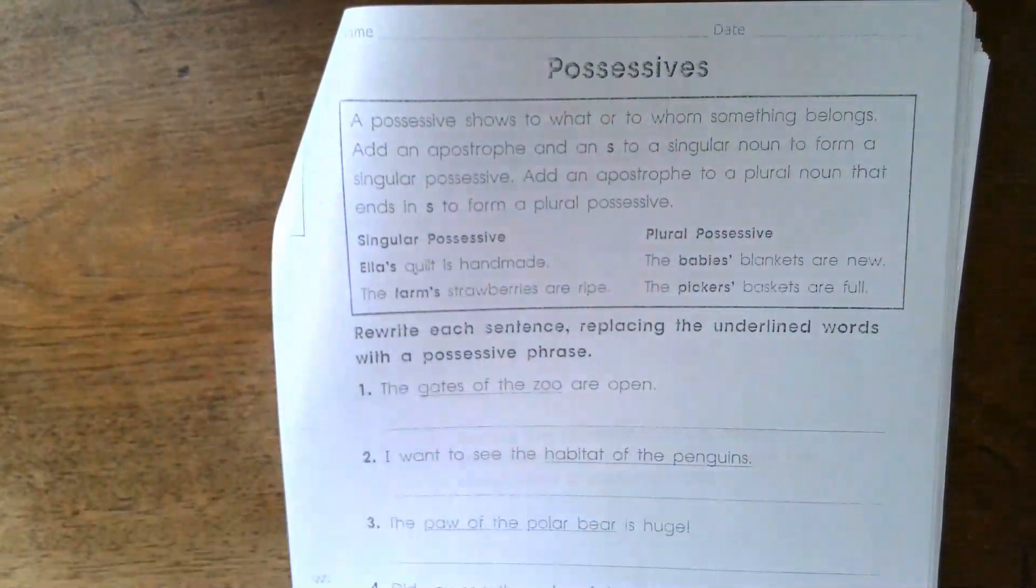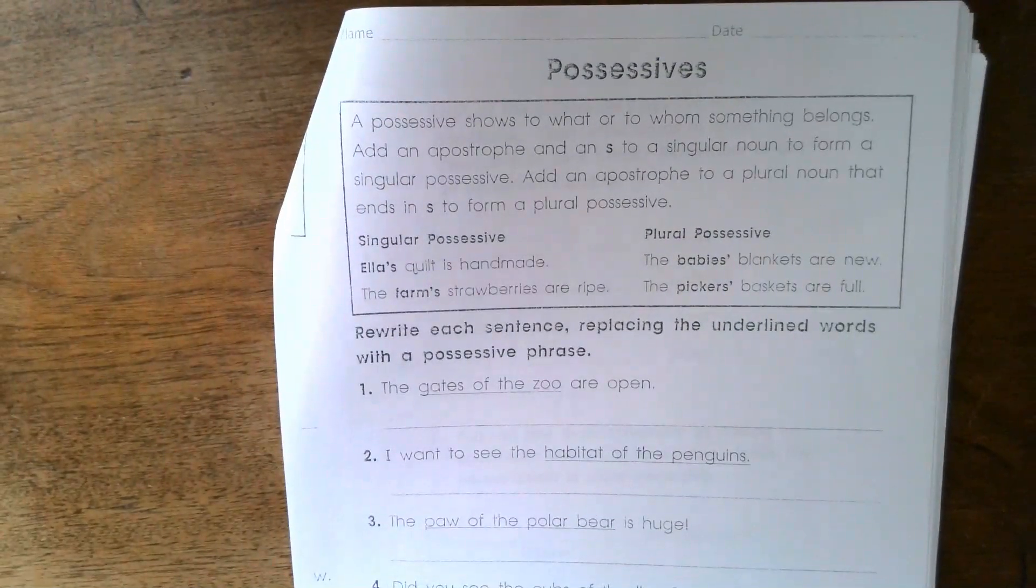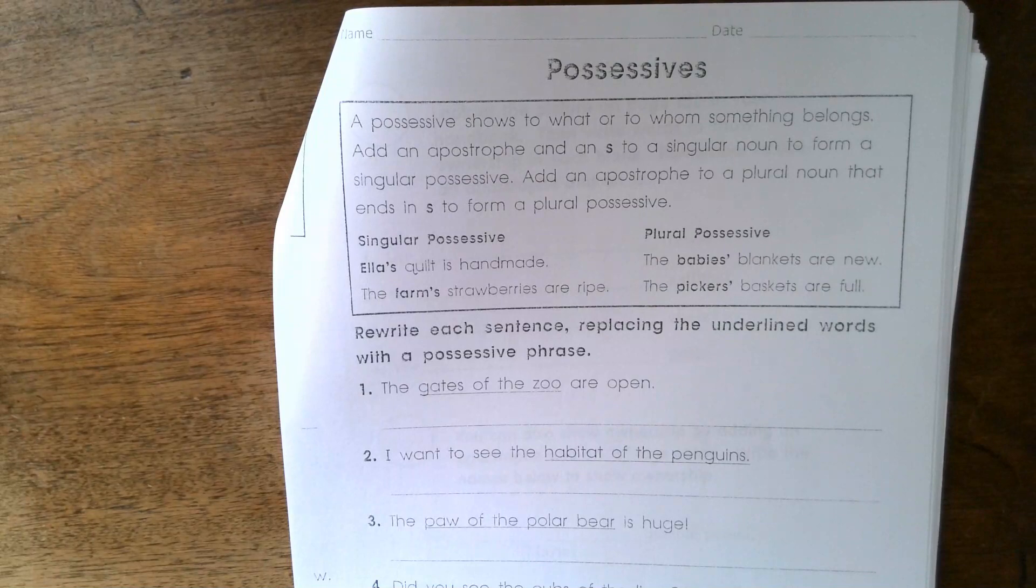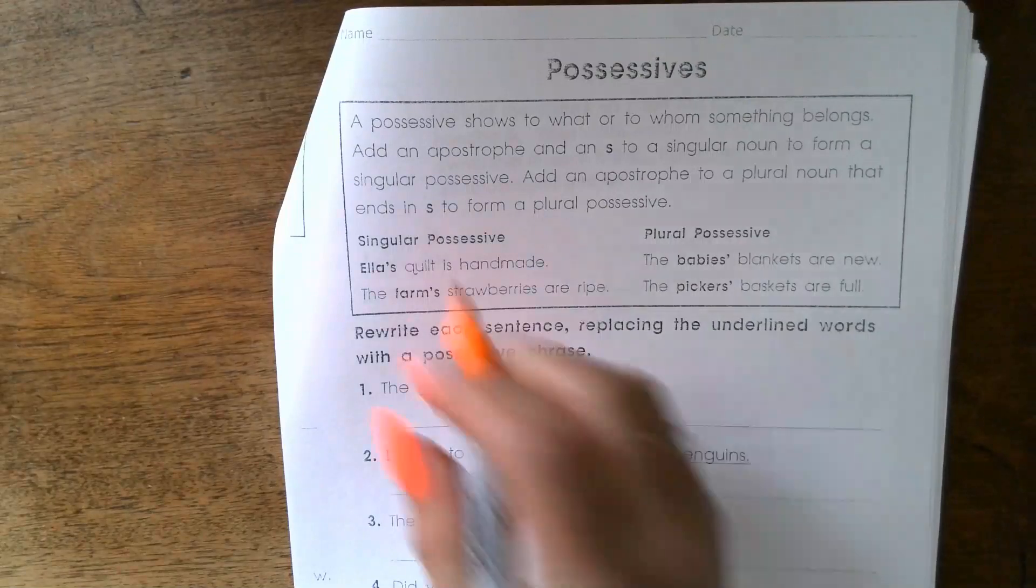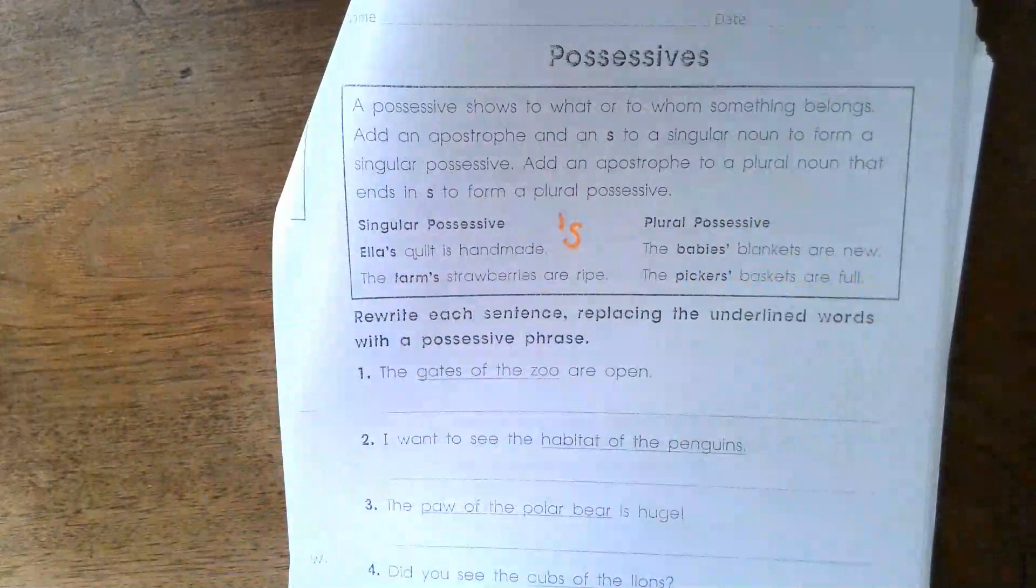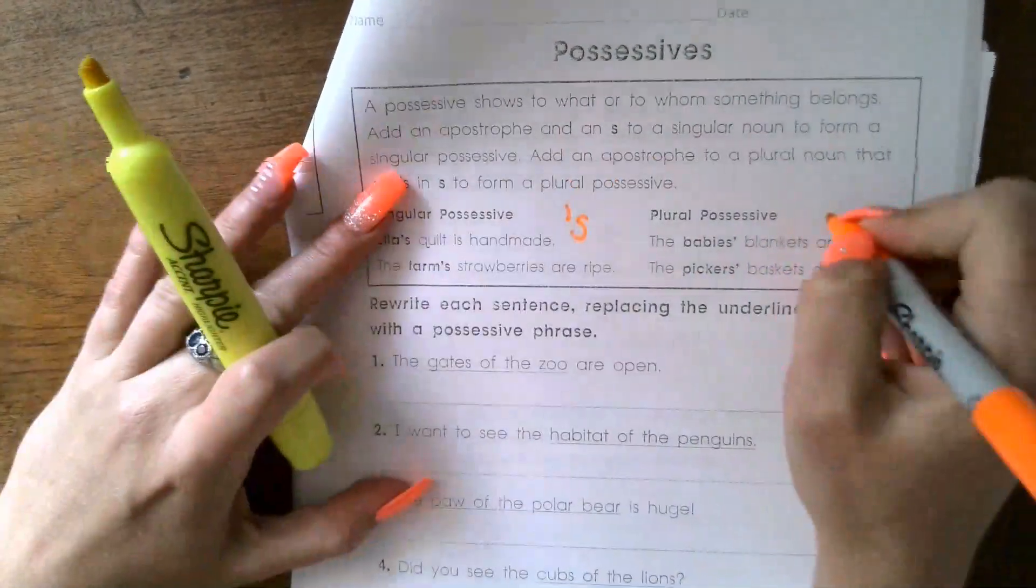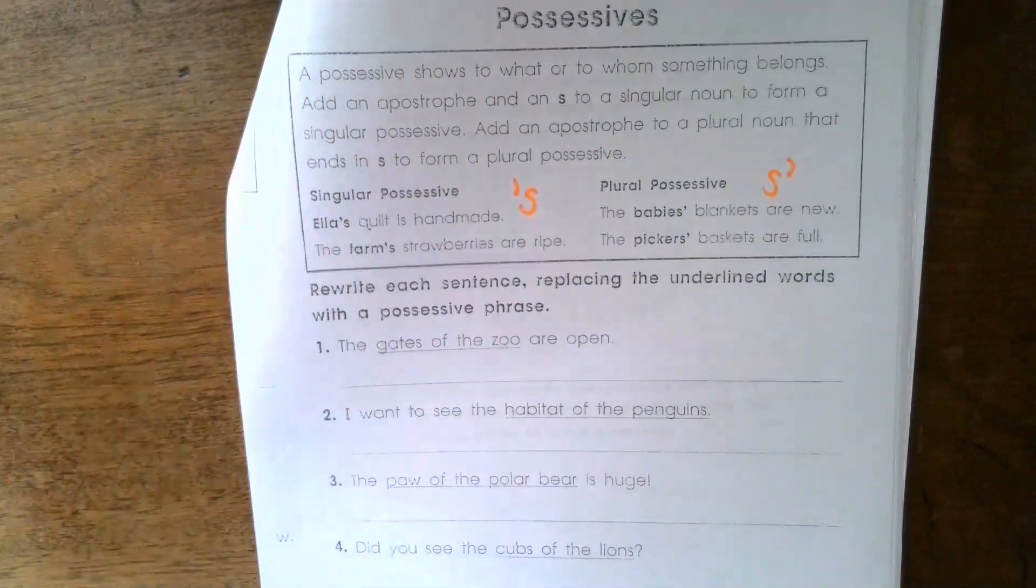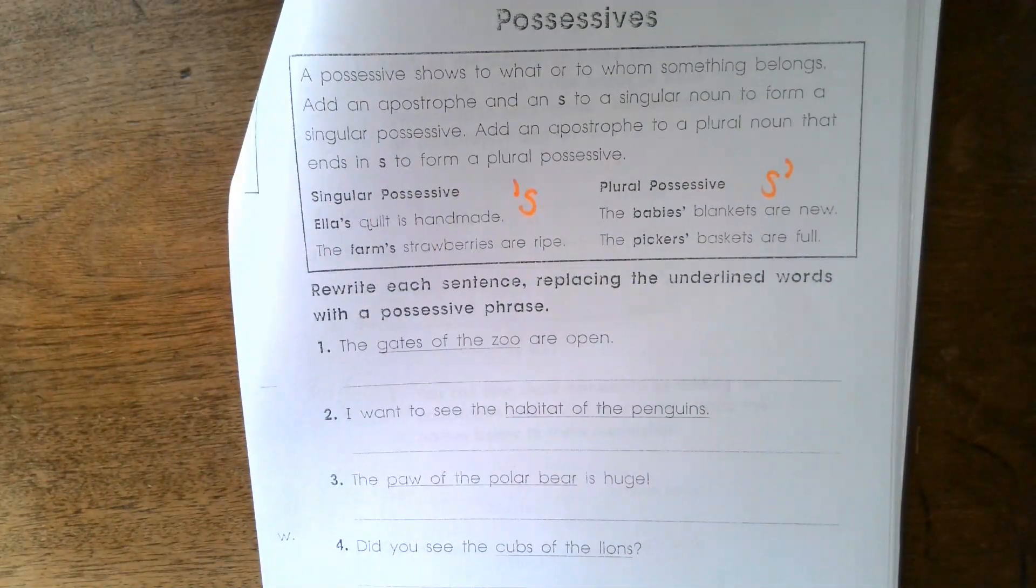Now we're looking at possessives as we've been doing all week. We had an excellent Zoom session. This is a really hard skill, okay? The main thing you need to ask yourself is: are we talking about one or more than one? If we're talking only about one, for example Ella's, it's always going to be apostrophe S. But if we're talking about more than one, it's going to be S apostrophe. The apostrophe will go after the S.